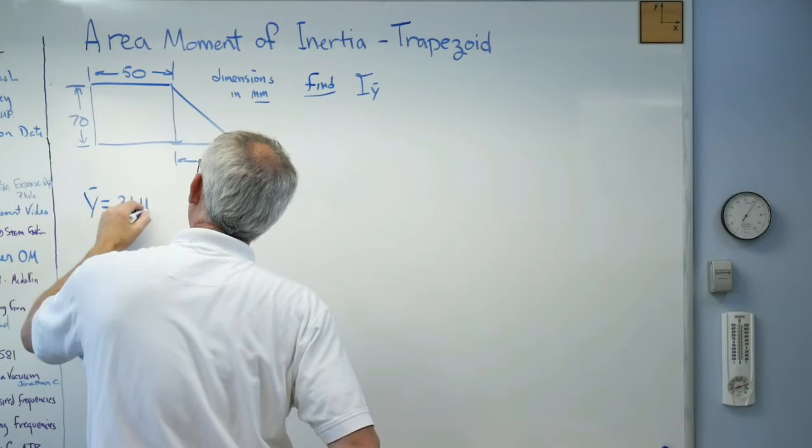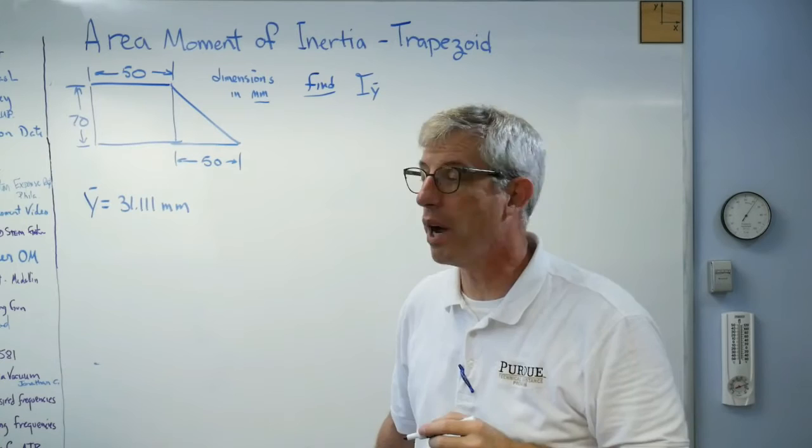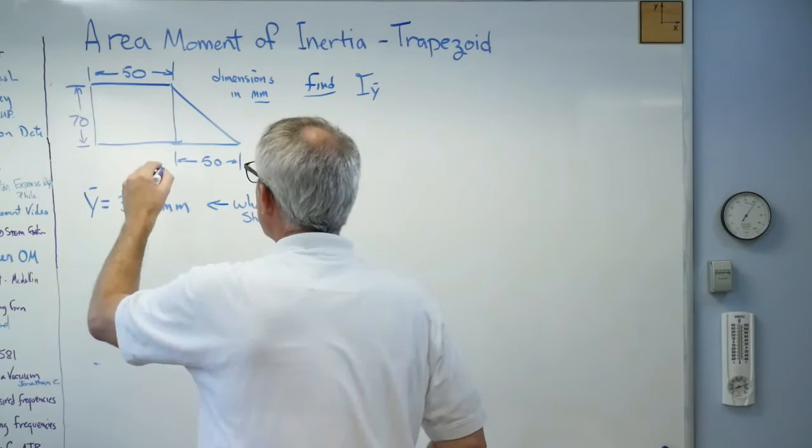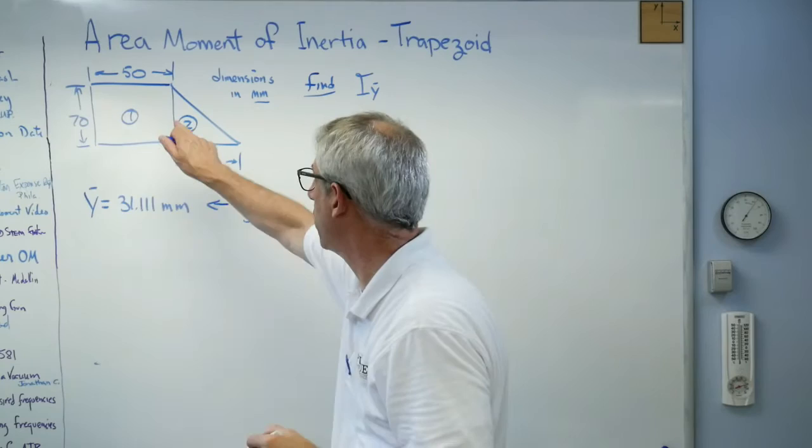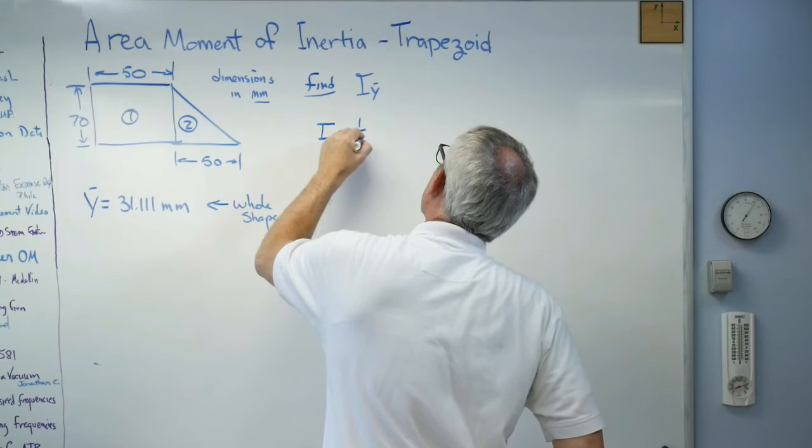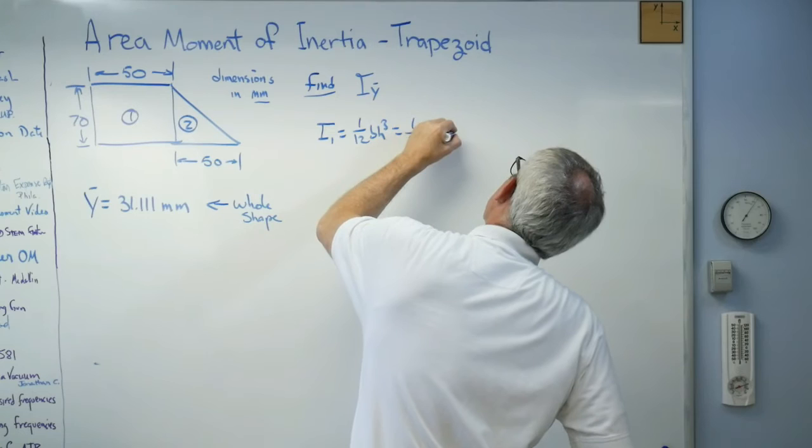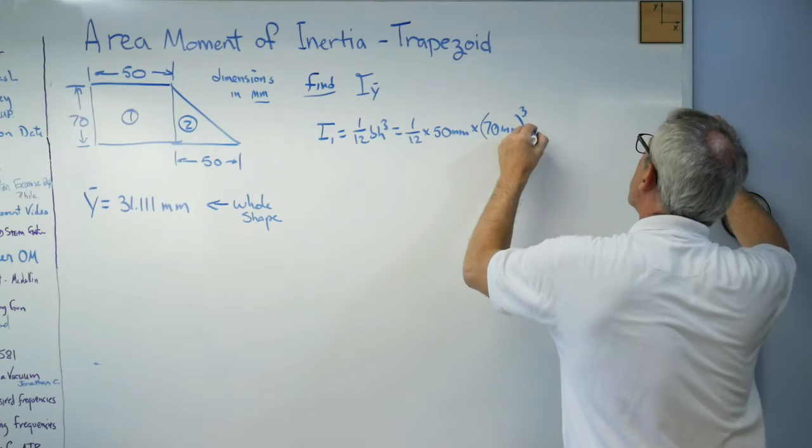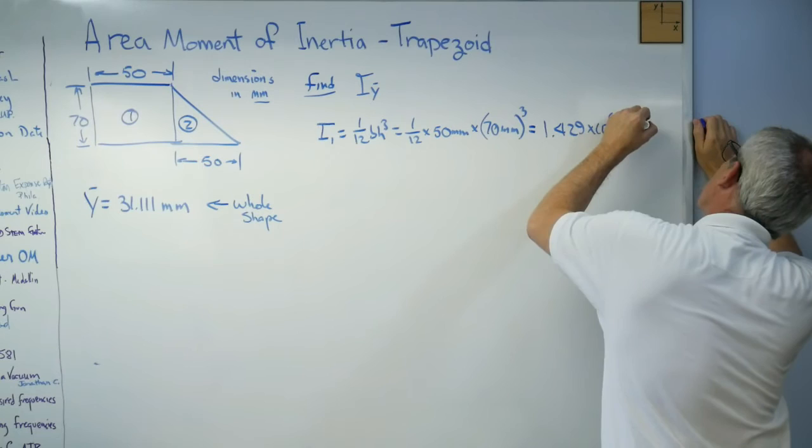Well, to make this not take too long, I'll give you some of the numbers right up front. The centroid for the entire shape, that's for the whole shape, is 31.111 millimeters. I'm going to call this one and this two. Now, I know these were different than what I used before, but it'll be a little easier if we do it this way. i_1 is 1/12 bh cubed. So, that's 1 over 12 times 50 millimeters times 70 millimeters cubed. And that turns out to be 4.29 times 10 to the 6, millimeters to the 4th.